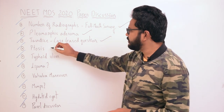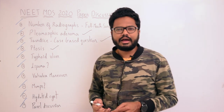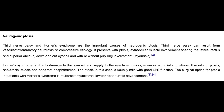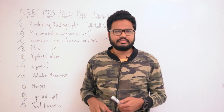Moving on to ptosis — drooping of the eyelid — there are different causes. Neurogenic cause is one among them; third nerve palsy and Horner syndrome are important causes of neurogenic ptosis. Third nerve palsy can result from vascular, inflammatory, neurotoxic, or compressive etiology. It presents with ptosis, extraocular muscle involvement sparing the lateral rectus and superior obliques, a down-and-out eyeball, and with or without pupillary involvement such as mydriasis.